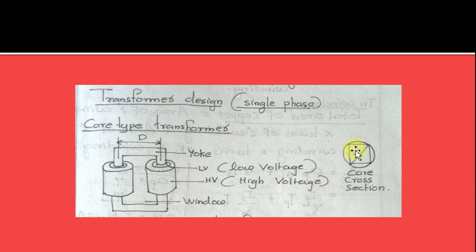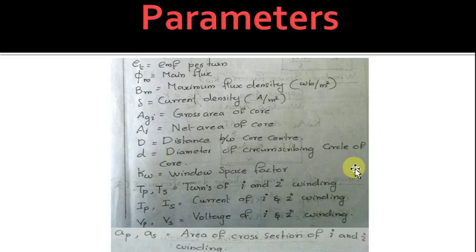Parameters we should know before designing the transformer: E_T is EMF per turn, phi_m is main flux, B_m is maximum flux density, delta is current density, A_gi is gross area of core, A_i is net area of core.